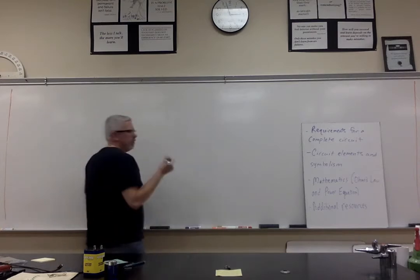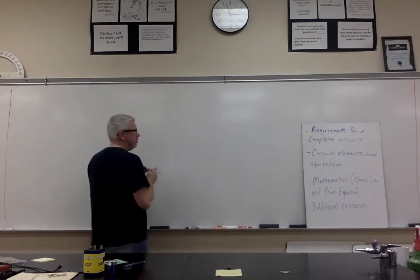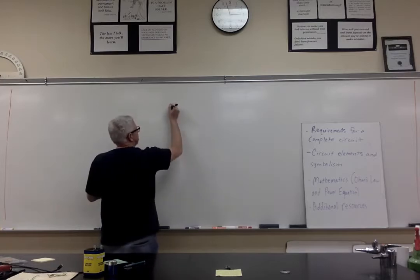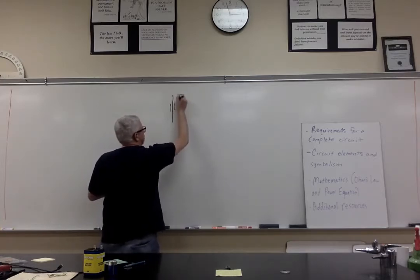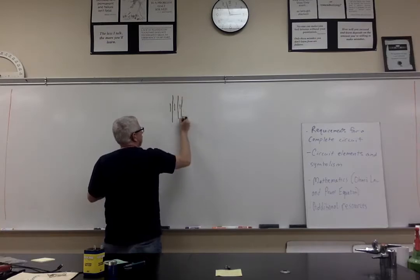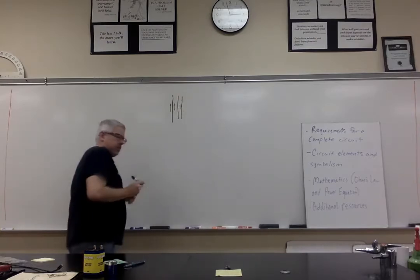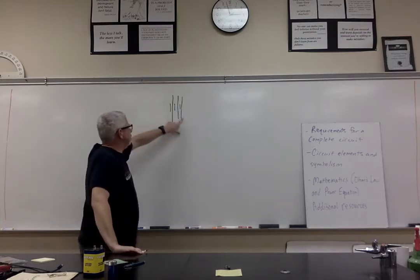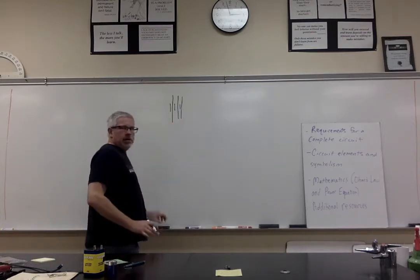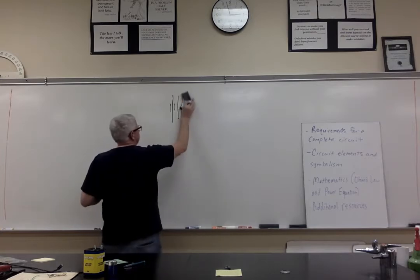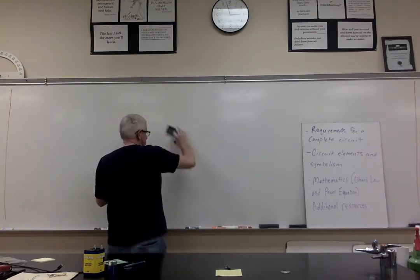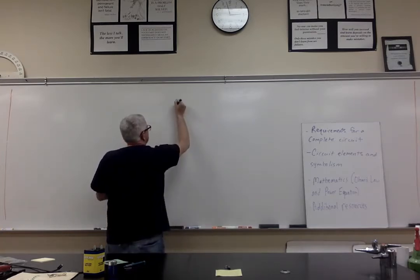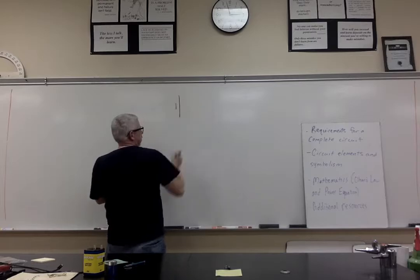Normally, what we'll end up doing is showing a power source with a potential difference, which we measure in volts. It's something like this — either a short line and a long line. Sometimes you'll see multiple short lines and multiple long lines for a battery. The short line is the negative side and the long line is the positive side.